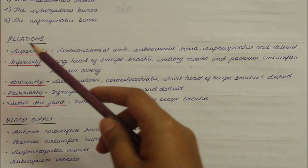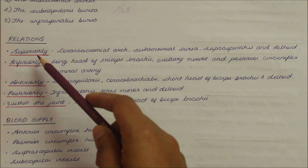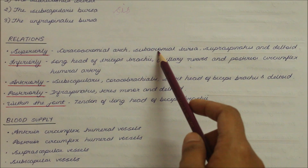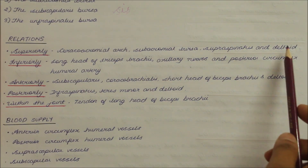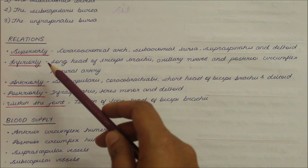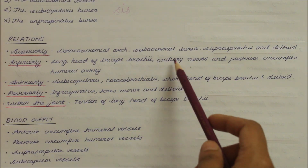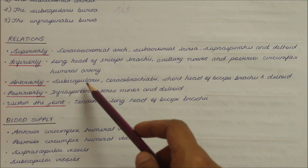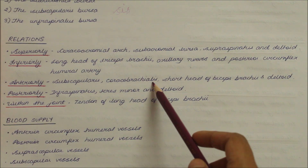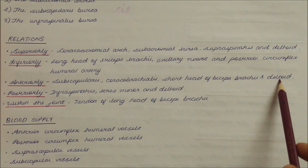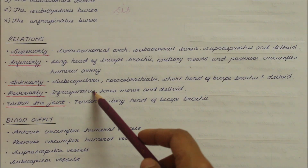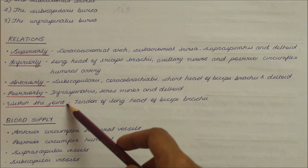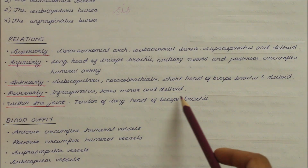To summarize the relations: superiorly — coracoacromial arch, subacromial bursa, supraspinatus, and deltoid. Inferiorly — long head of triceps, axillary nerve, and posterior circumflex humeral artery. Anteriorly — subscapularis, coracobrachialis, short head of biceps brachii, and deltoid. Posteriorly — infraspinatus, teres minor, and deltoid. Within the joint, there is the tendon of the long head of the biceps brachii.